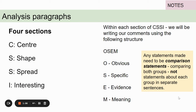In our analysis section we're going to have four different parts: the center, the spread, the shape, and the interesting — we call that CSSI. We follow OSIM: obvious, specific, evidence, and meaning in our statements, so that we cover all the parts from achieved through to excellence. Obvious and specific are talking about the graph.